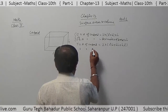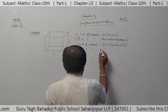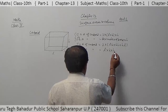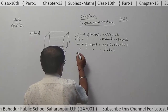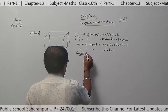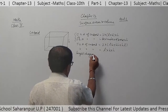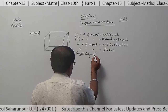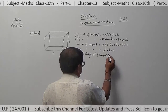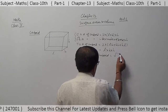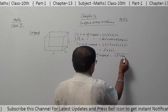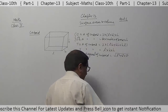Volume of cuboid is length into breadth into height. Longest diagonal of cuboid is square root of (L squared plus B squared plus H squared).